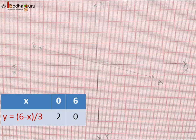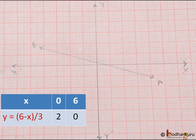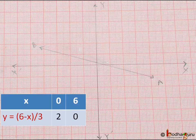Now from the table of first equation we draw the graph. We have two points: 0, 2 and 6, 0. So AB is the graph of first equation.